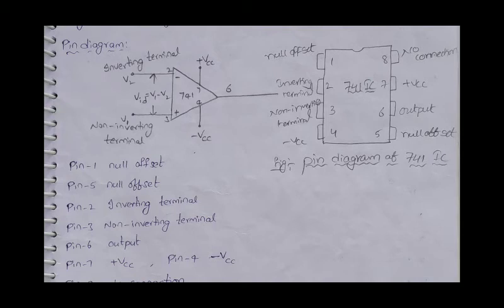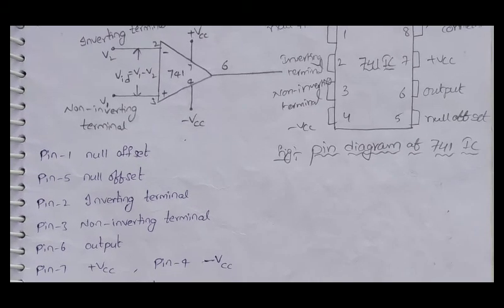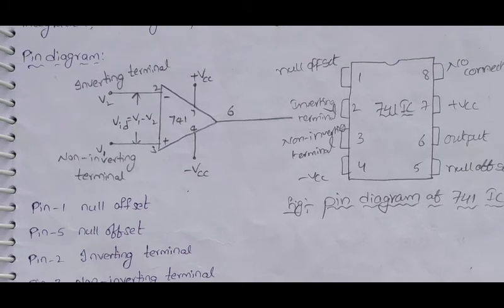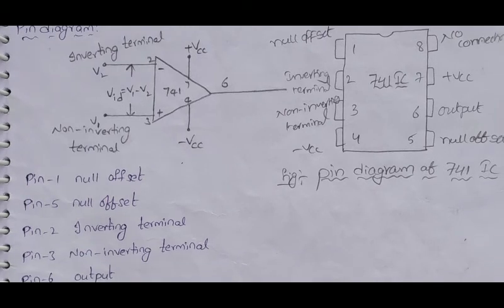Pin 6 is the output terminal. Pin 2 is the inverting terminal and pin 3 is the non-inverting terminal. Pin 4 is the negative supply, pin 7 is the positive supply, and pin 6 is the output. These 5 pins are very important pins in the IC 741 schematic symbol.